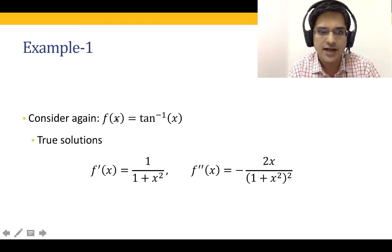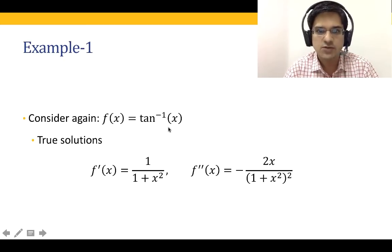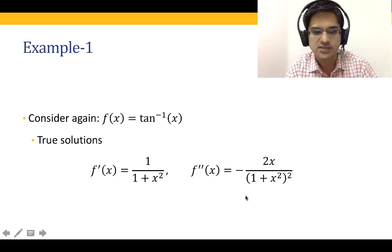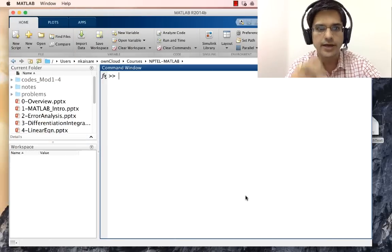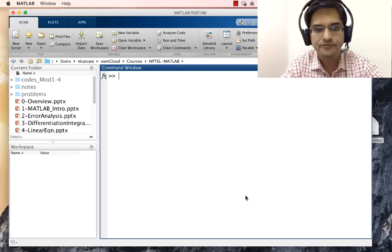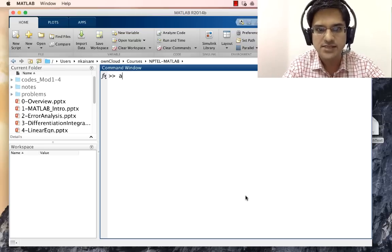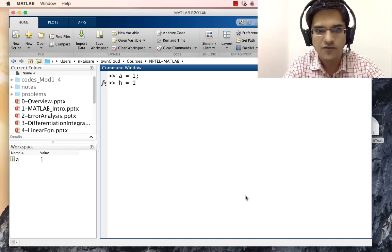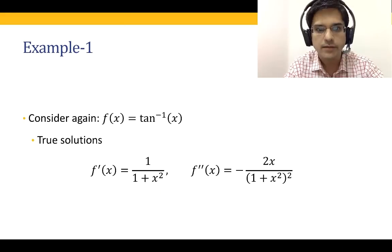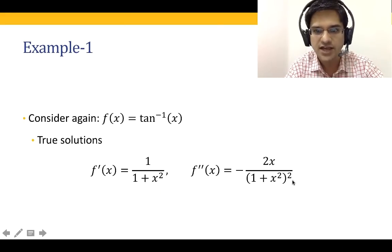Let us look at the problem: f(x) = arctan(x), and let us compute f''(x). Let us go on to MATLAB and find f''(x) at x = a, where a = 1. Let h = 1e-4. We want to compute f''(arctan), and f'' is given by the central difference formula.